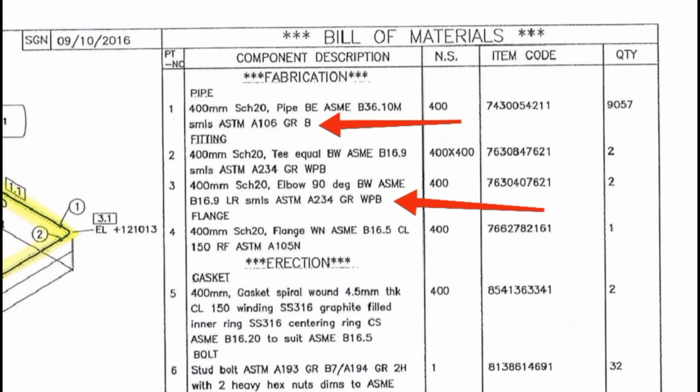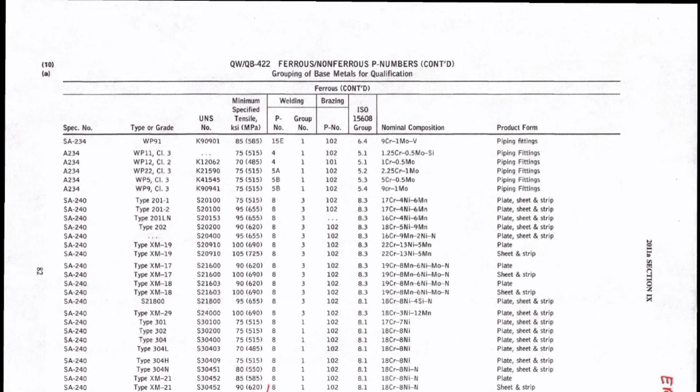ASTM A234 — we have Grade A and Grade B. Now we have a table in ASME Section 9. There is a table in QW-422. There are around 100 pages with a list of materials. There is a list starting from the spec.